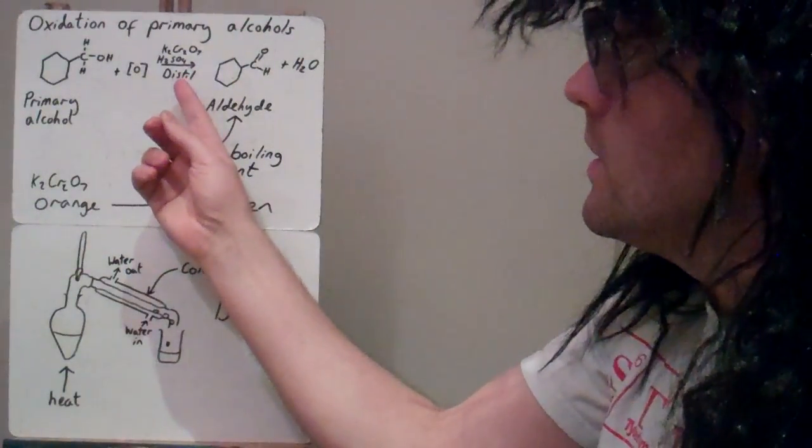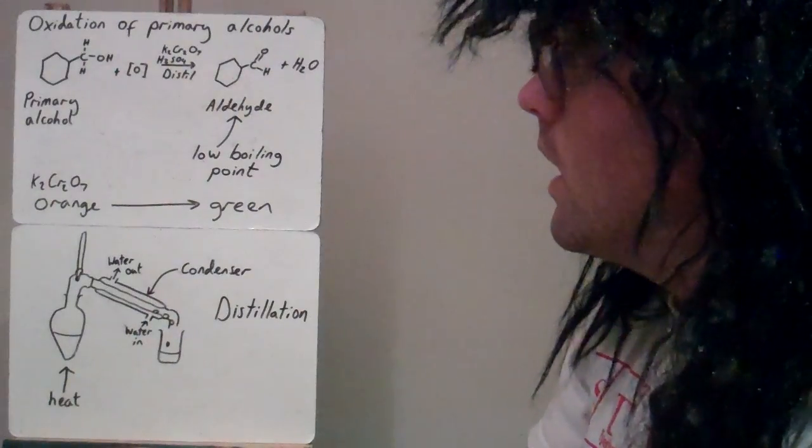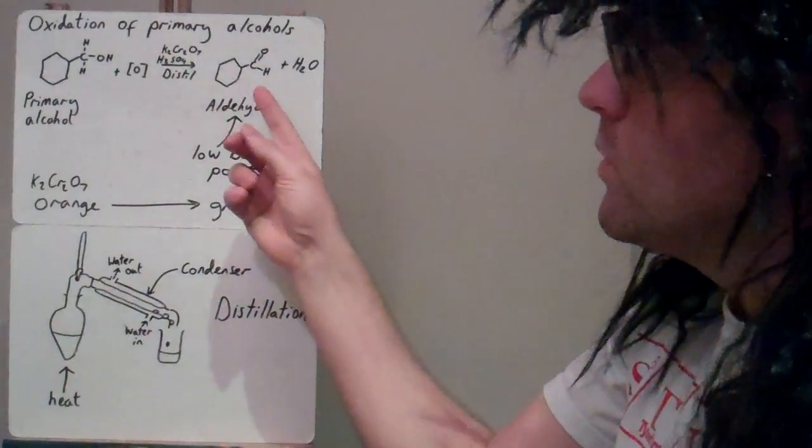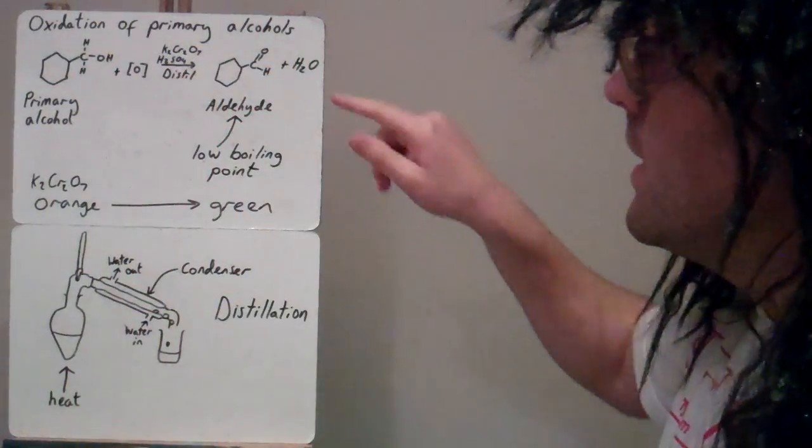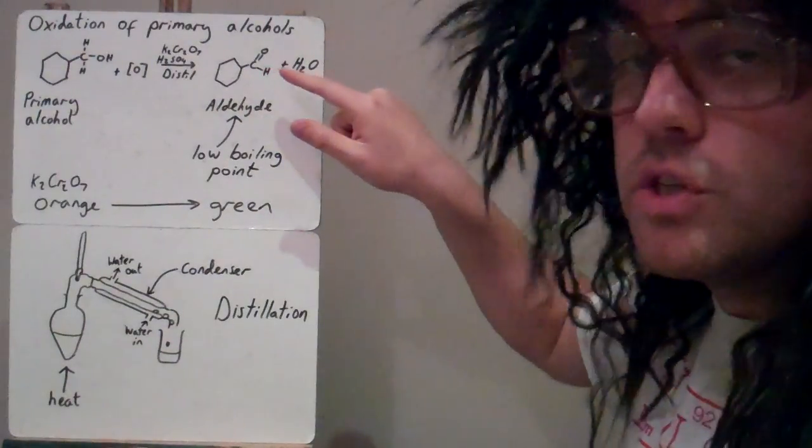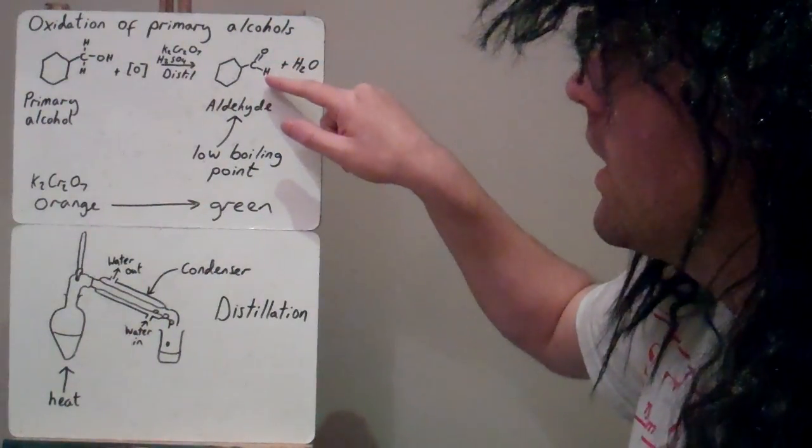Now in these conditions here we're going to distill to a distillation and in that case we produce an aldehyde. This group here is the aldehyde. It's always on the end of a chain, so you've got a carbon, double bond O and just one hydrogen.